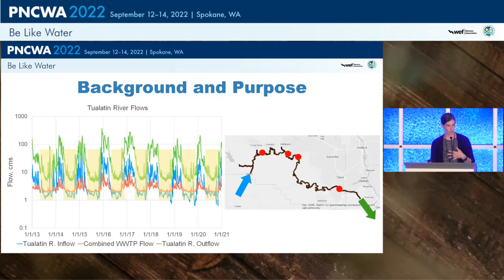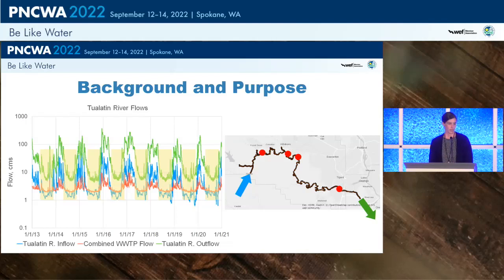Other flows into the system consist of Dagen's Creek, which is impounded by Hag Lake Dam, and that is able to compensate for some of the flow demand in the summer.